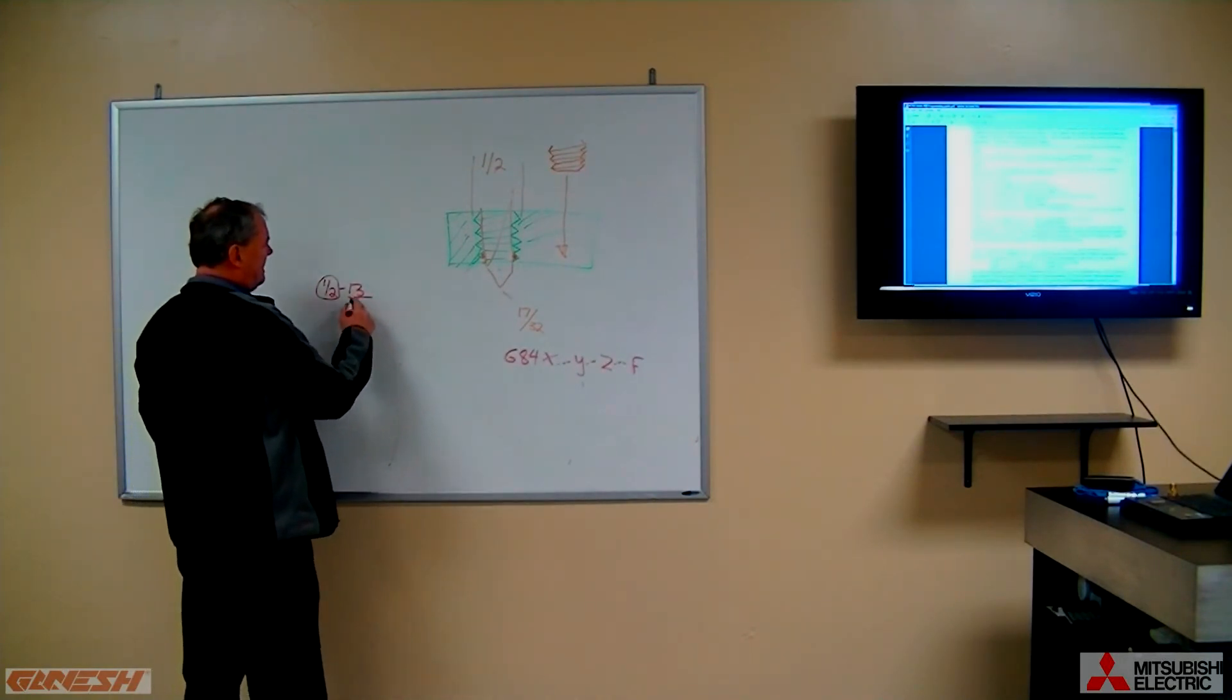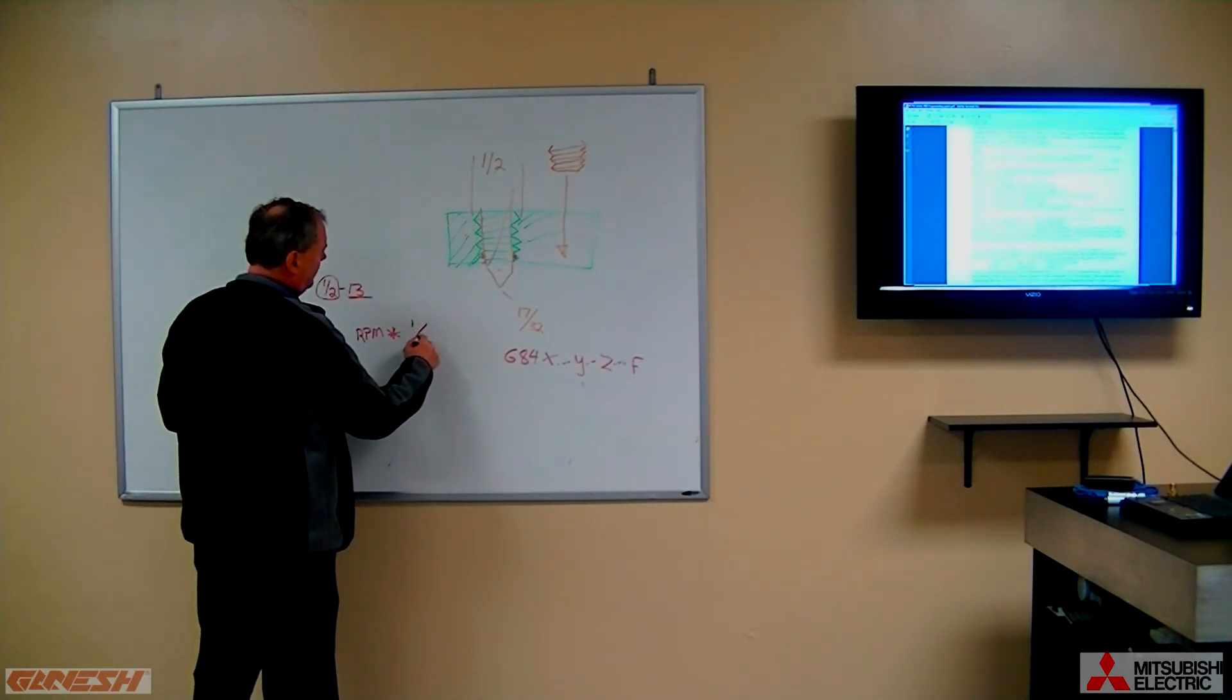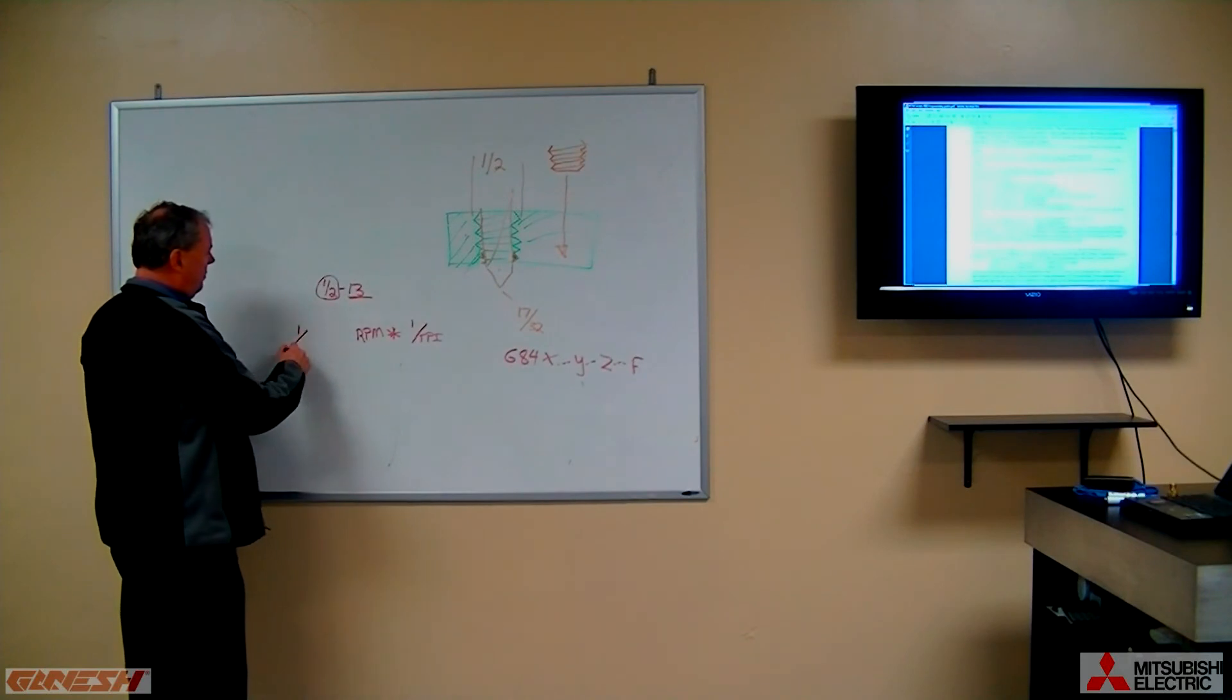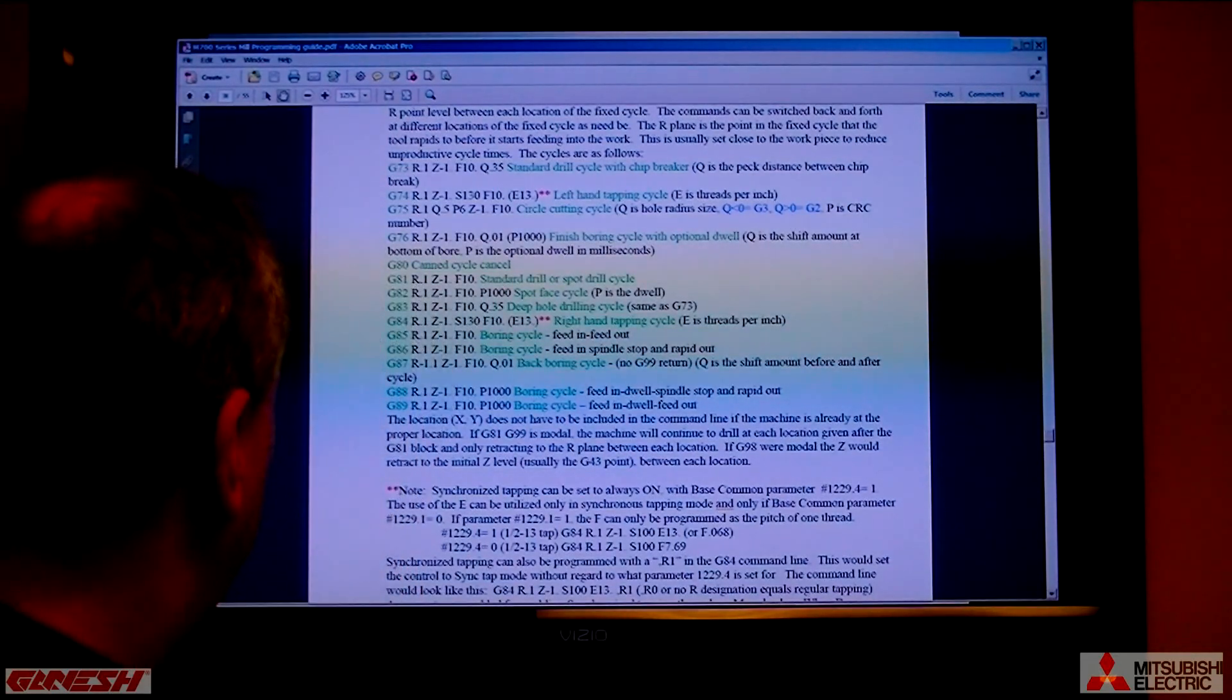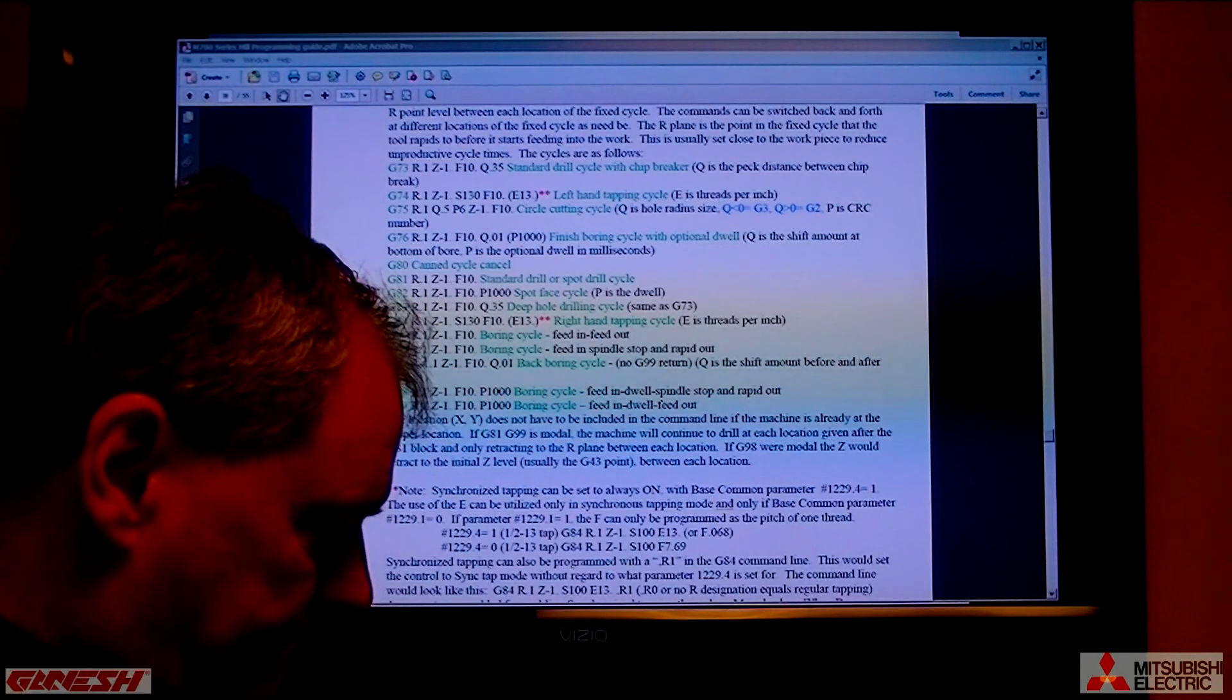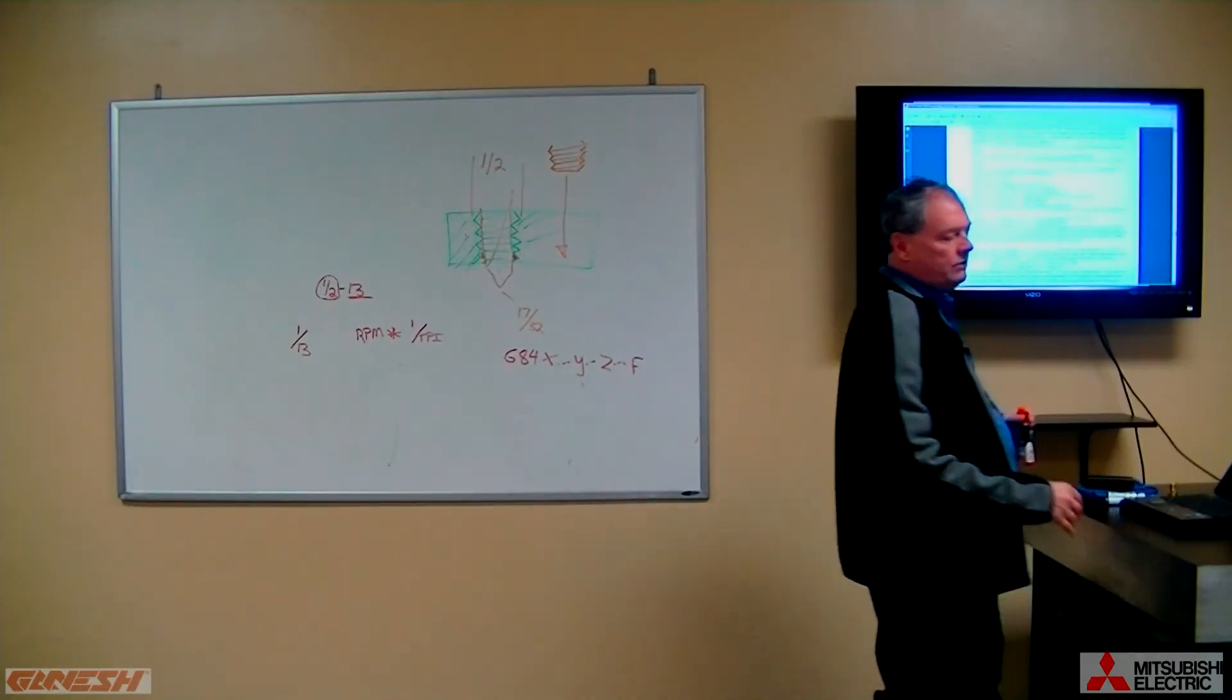The formula for feed rates on taps are to take your RPM, whatever RPM you're running, and multiply it by one over the number of threads per inch. So if you divide 1 over 13, you will get a number like, let me do that very quick because I can't do that in my head too easily anymore. I think it's something like .07, but let me just double check that. So 1 divided by 13 is .0769.